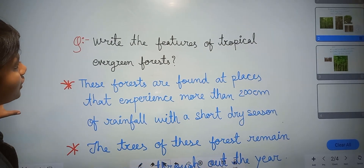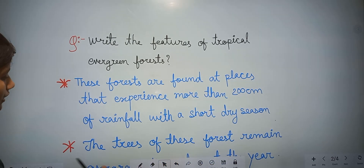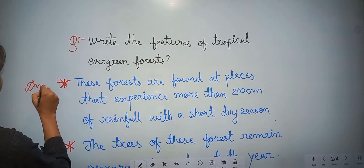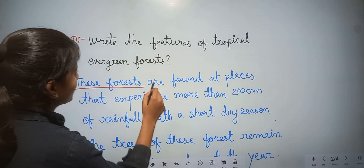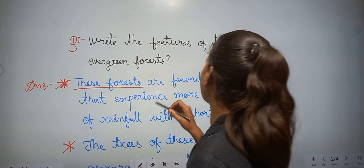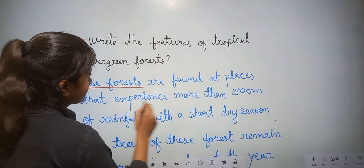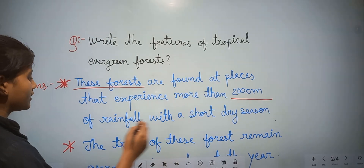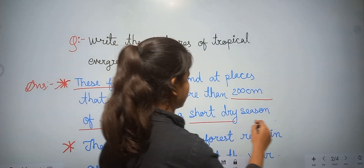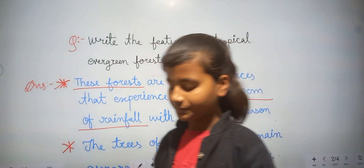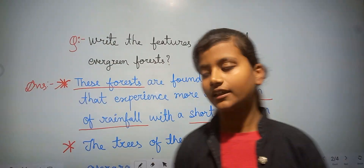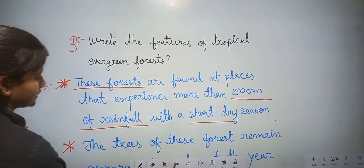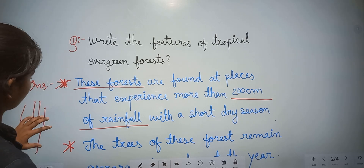Write the features of tropical evergreen forest. The first point is: these forests are found at places that experience more than 200 centimeters of rainfall with a short dry season. It means plants in this forest receive 200 centimeters of rainfall.